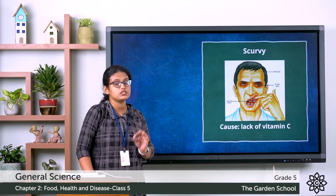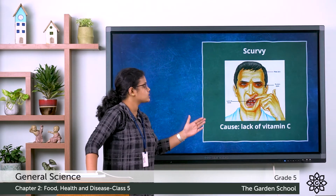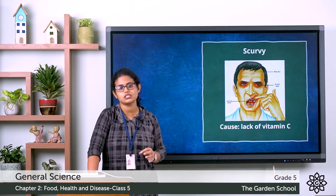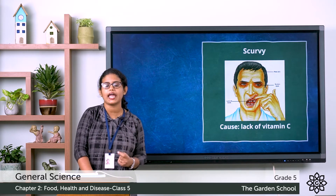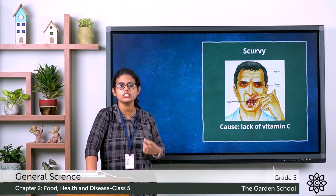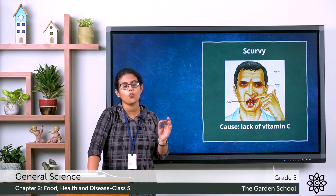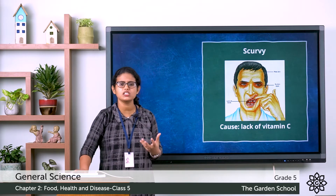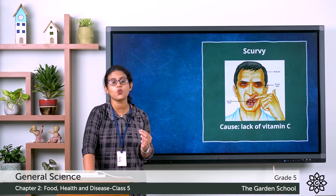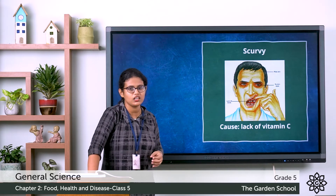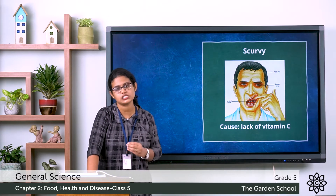The next deficiency disease is scurvy. It is caused due to lack of vitamin C, which keeps our gums and teeth healthy. The symptoms of scurvy include swollen and bleeding gums, pale skin, and loss of teeth.